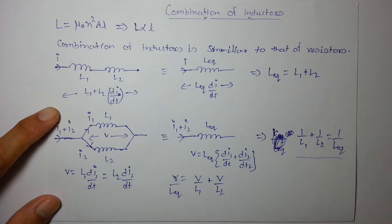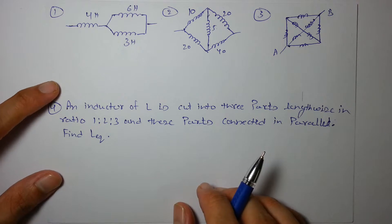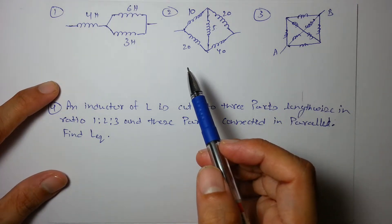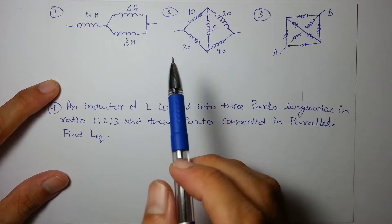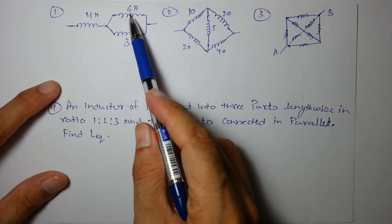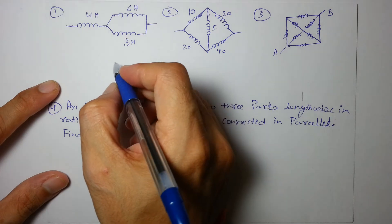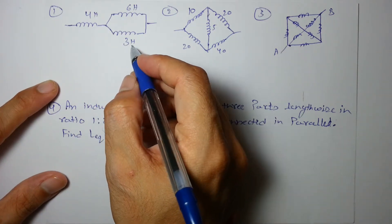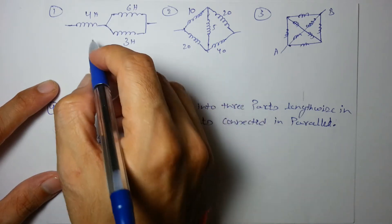Let's solve a few questions on them. As I said, their combination is quite similar to that of resistances. If you are comfortable with combination of resistances, then you will not face any problem with combination of inductors. Let's get started with the first one: 6 and 3 when they are in parallel will give you 6×3/(6+3) = 2 Henry, and 2 Henry and 4 Henry will be in series, so the equivalent will be 6 Henry.